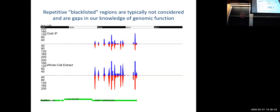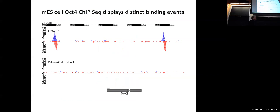Here is legitimate OCT4 binding around the SOX2 gene. OCT4 and SOX2 are key regulators of embryonic cell state. What we would like to do is take these data and discover exactly where OCT4 is binding. Remember, the black bars are about a thousand base pairs. We'd like to be able to localize the binding of that protein in the genome to much higher resolution — say within plus or minus five base pairs if we possibly could.